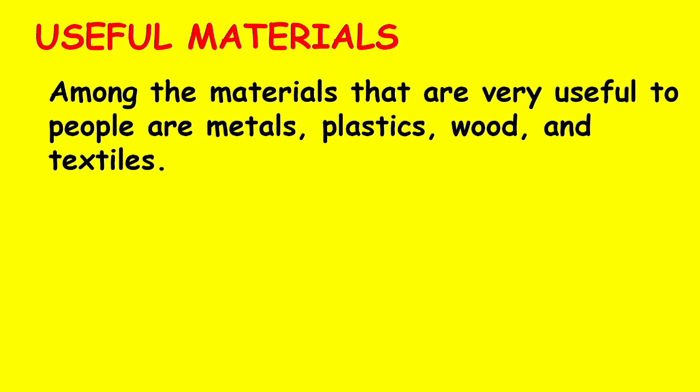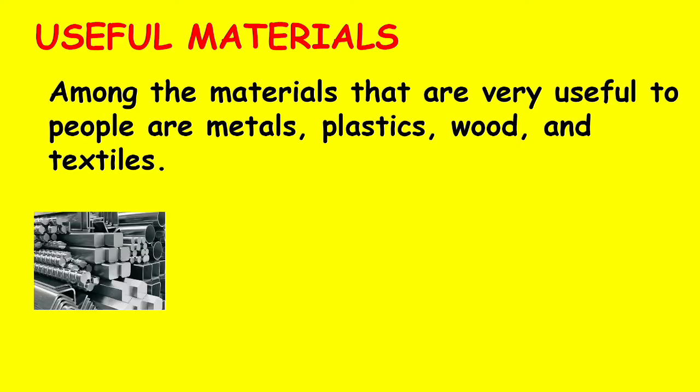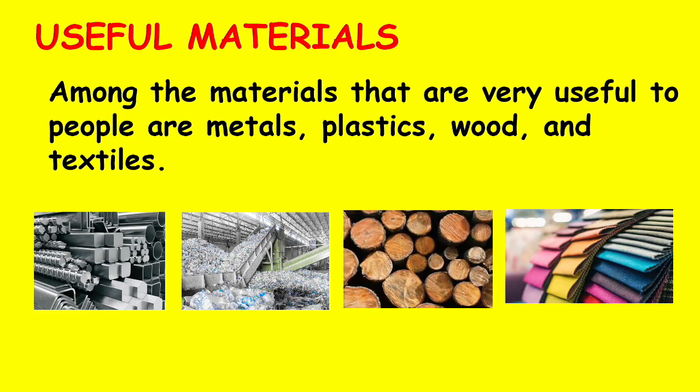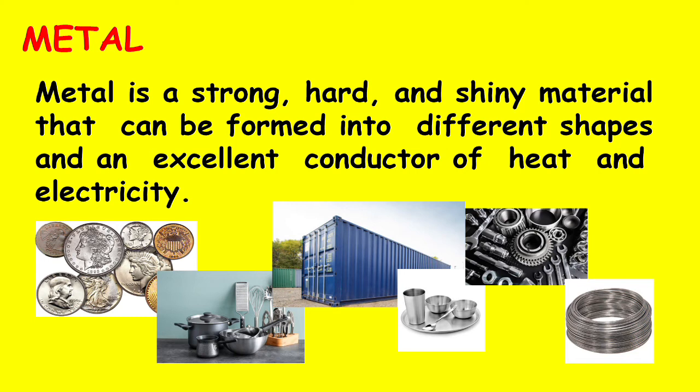Now let's talk about distinguishing between useful and harmful materials. A material's properties can help you determine if the object is useful or harmful. Knowing about these properties can help you handle the material correctly. Among the materials that are very useful to people are metals, plastics, wood, and textiles. Metal is a strong, hard, and shiny material that can be formed into different shapes and is an excellent conductor of heat and electricity. It is commonly used to make coins, kitchenware, containers, dinnerware, car parts, and wires.